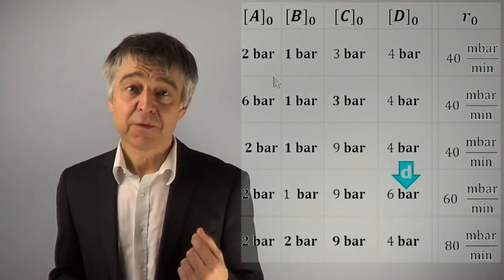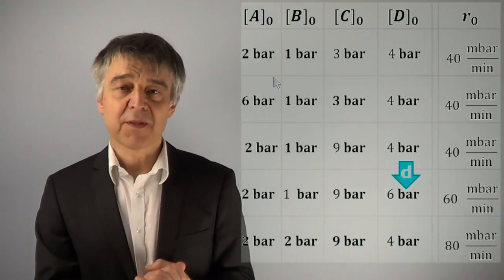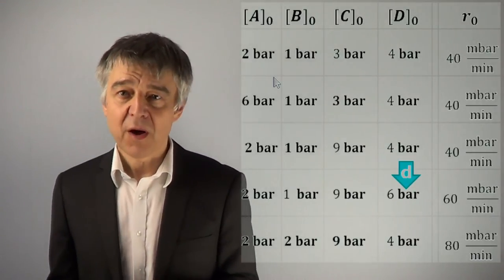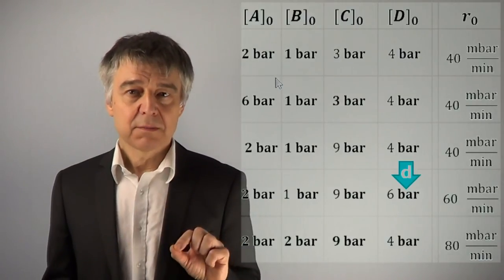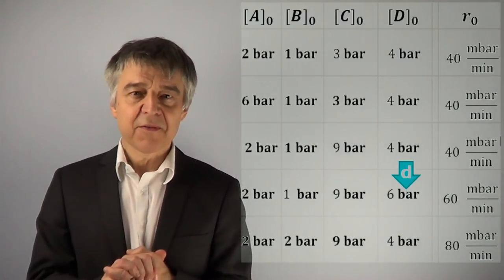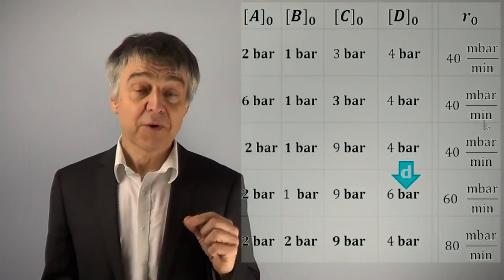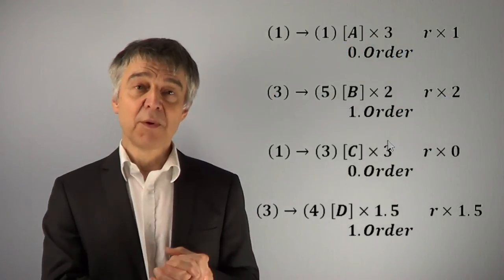If we selectively change the concentration of D, for example, if we compare experiment 3 to experiment 4, then the rate changes by the same factor, in this case 1.5. The reaction is first order with respect to D.